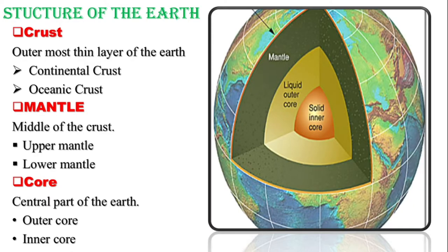Moving to the first topic — the structure of the earth. The earth is divided into three layers. The first layer is the crust, which is the outer layer of the earth. The crust can be divided into continental crust and oceanic crust, which you have seen in more detail in Chapter 1. The second layer is the mantle.